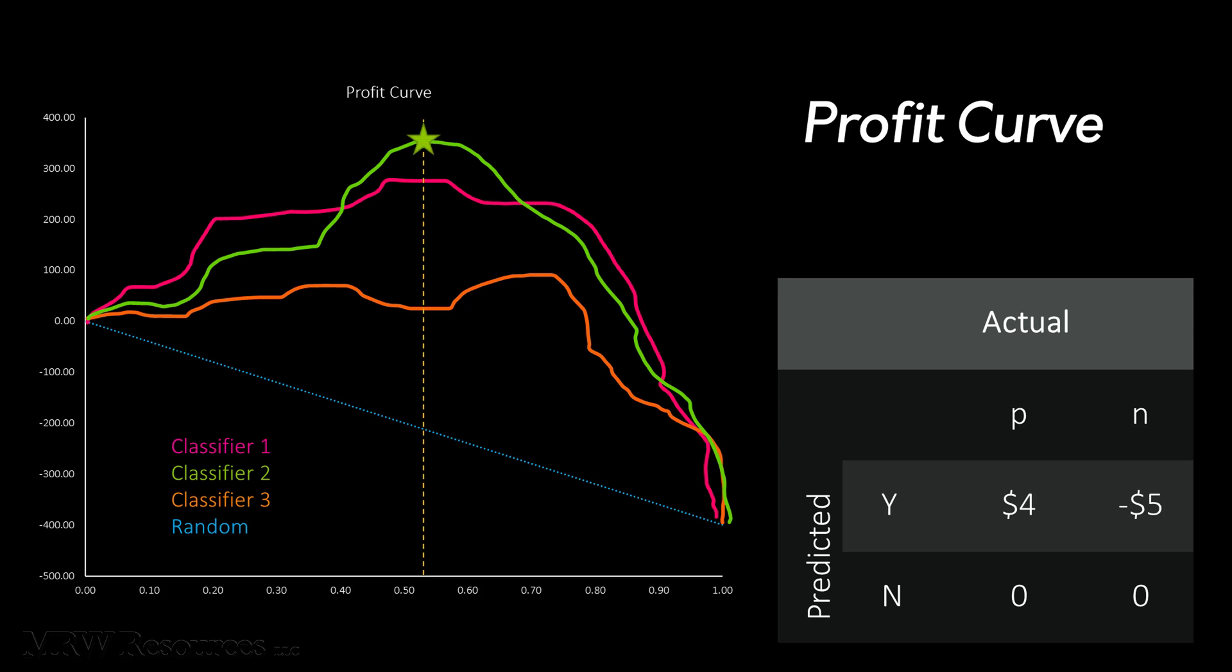to maximize profit, we will score the entire population with classifier 2, and then send offers to the 50% with the highest scores.